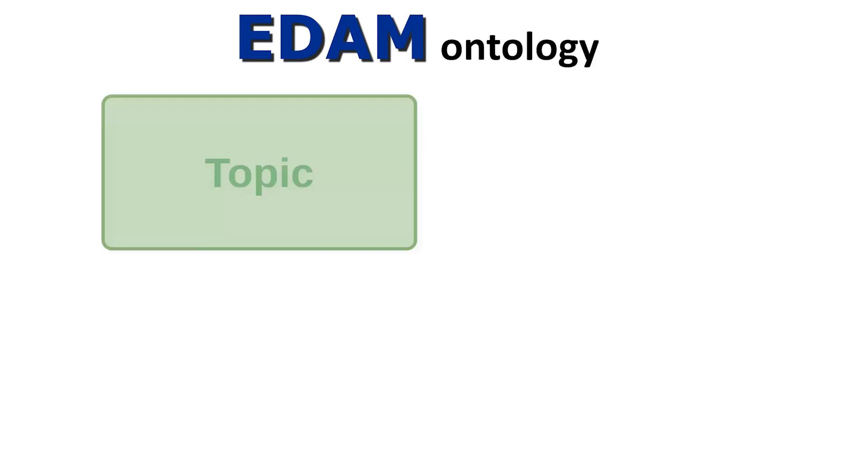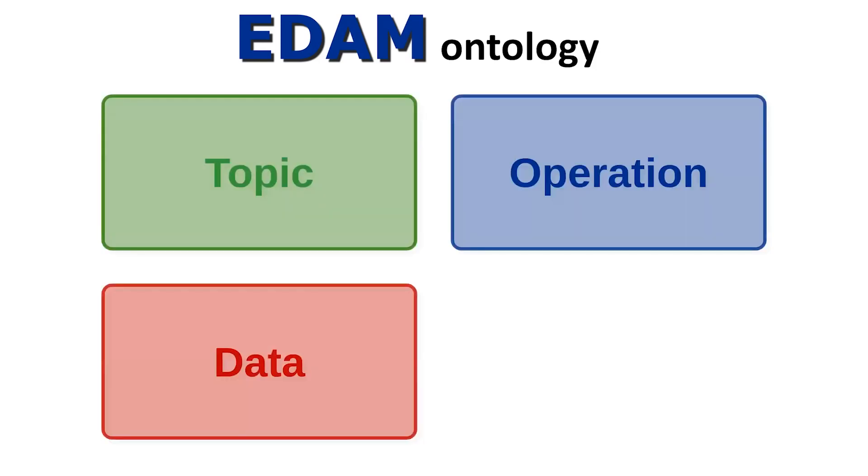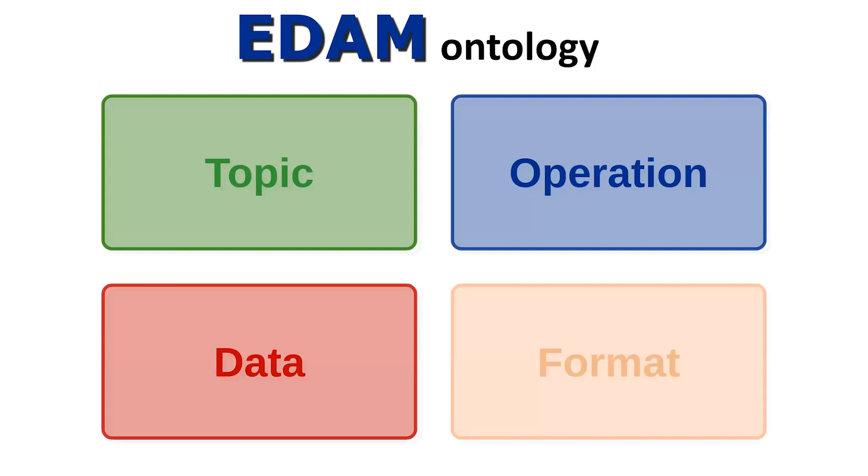EDAM ontology is a collection of over 3,500 concepts in data analysis and data management in life sciences and beyond. EDAM includes topics, operations, types of data, and data formats.